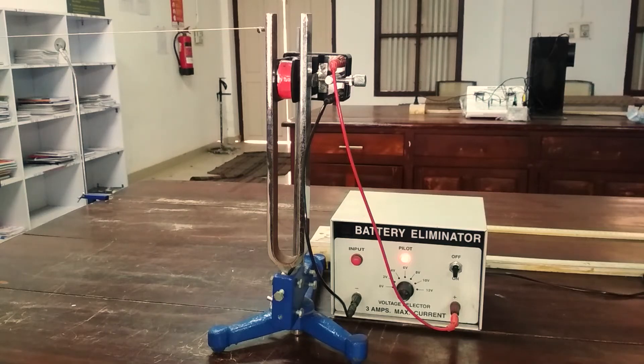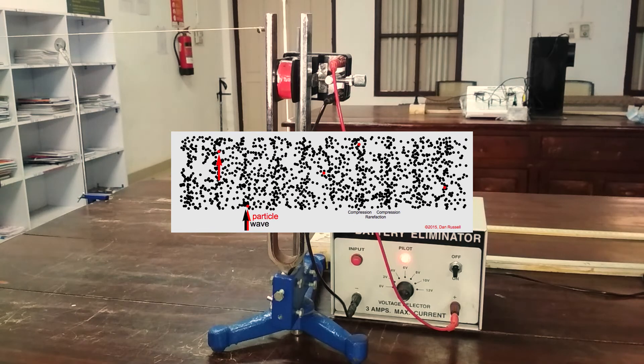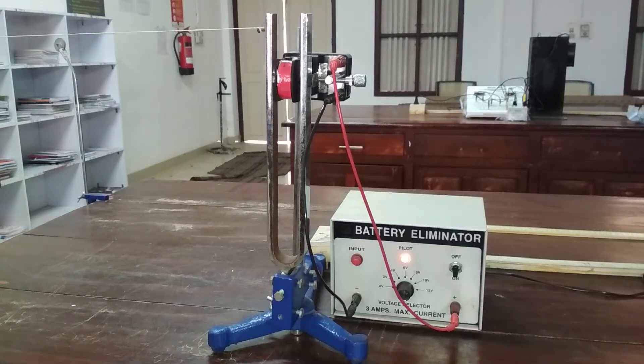To perform this experiment in the longitudinal mode, because here the propagation of waves are parallel to the vibrations of the tuning fork, we need to excite the tuning fork electrically. An electromagnet is placed at the end of the tuning fork. When power is applied, the electromagnet starts to magnetize and demagnetize. This will generate vibrations in the tuning fork.